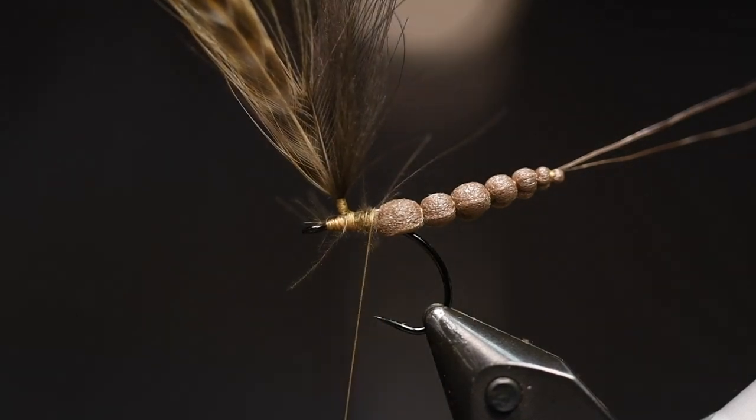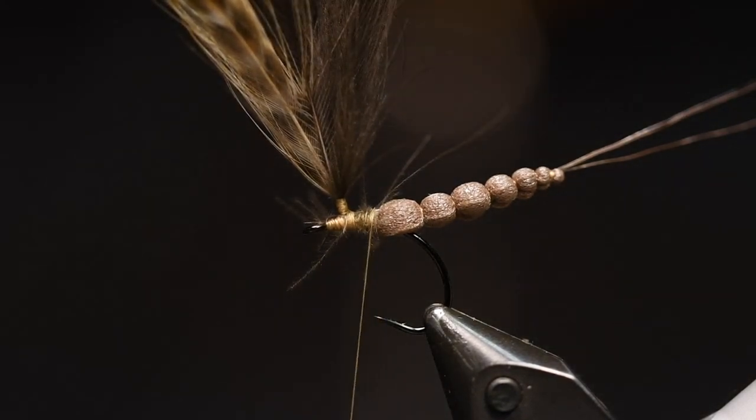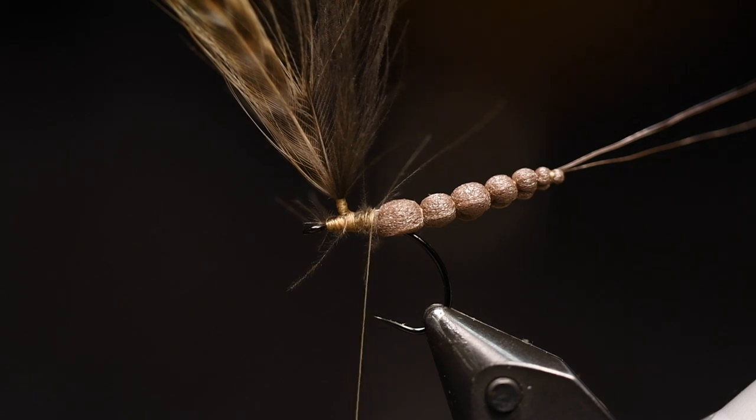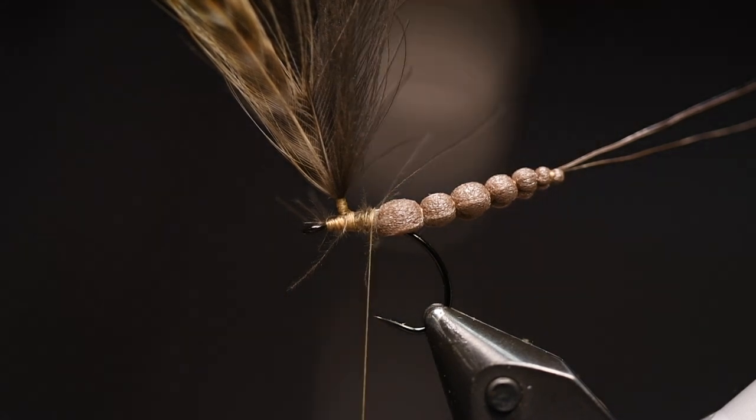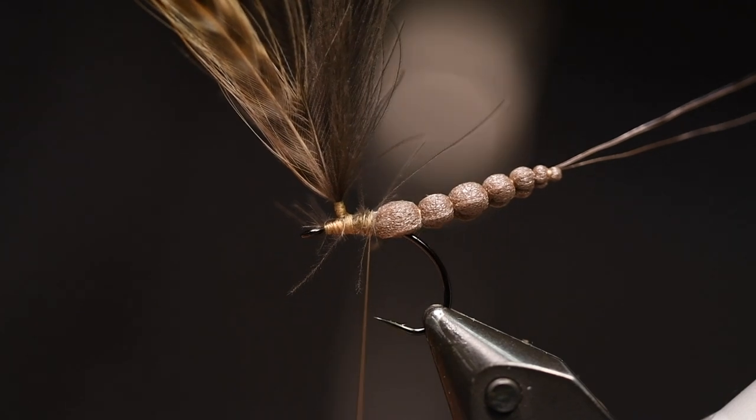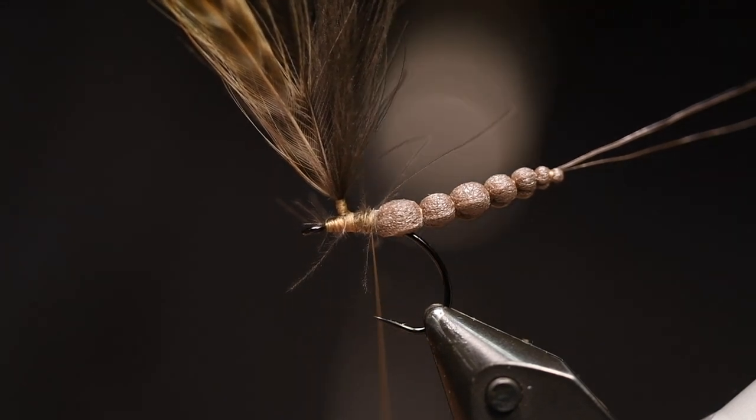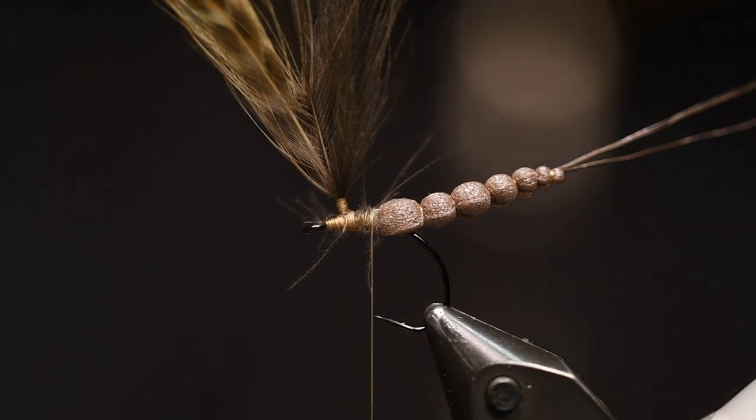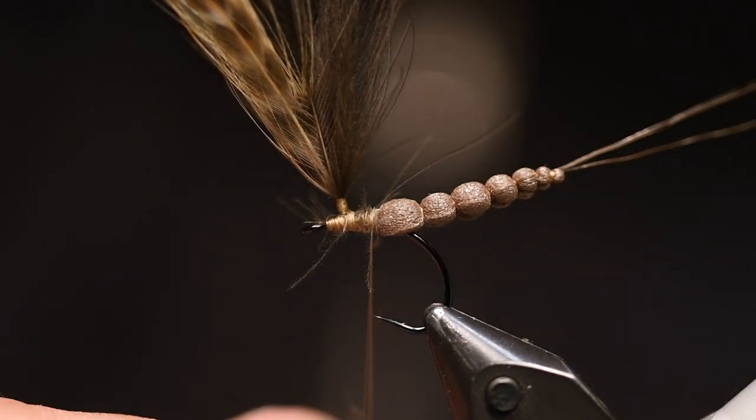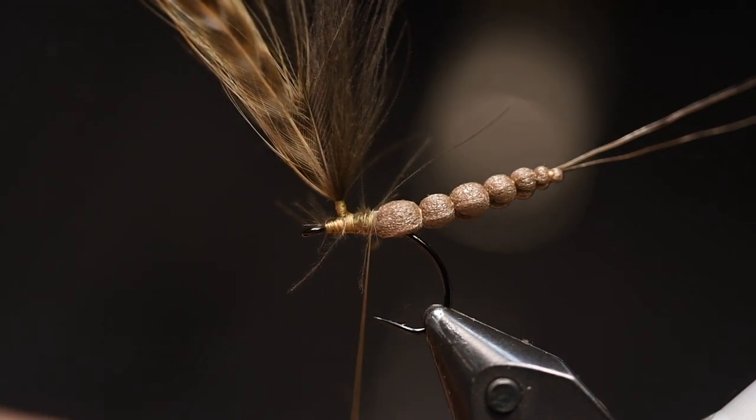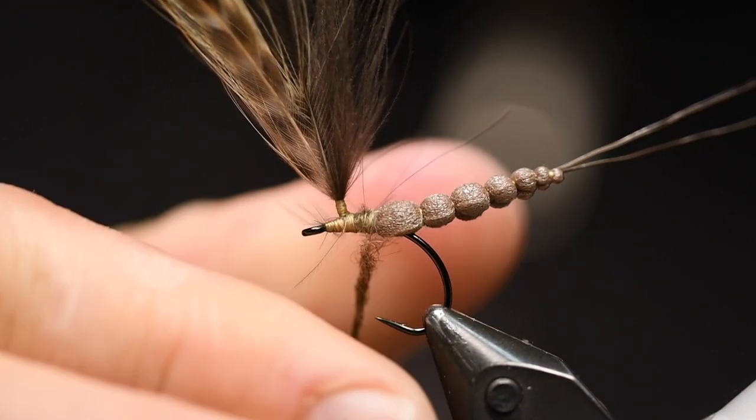And then for the body I use our own Alpacino dubbing which is from alpaca. This is of course the brown color. The good thing with this alpaca hair is that it has a little bit of air in its hair, so it will give some extra flotation.